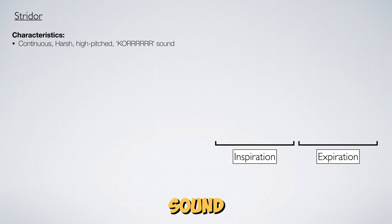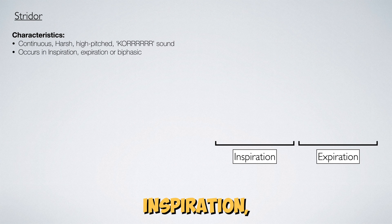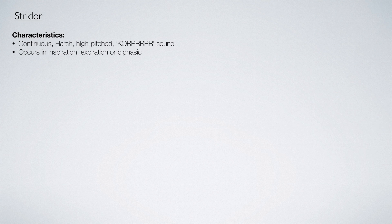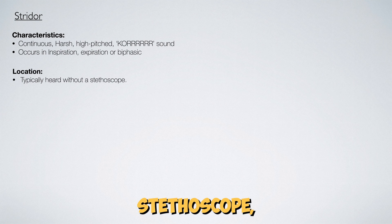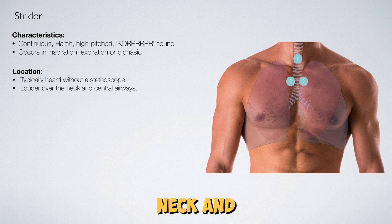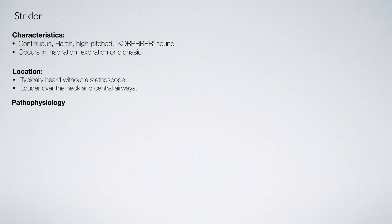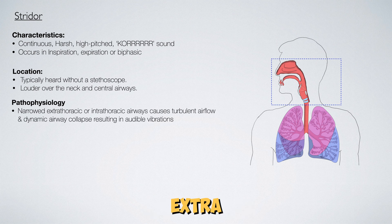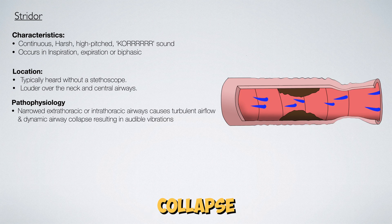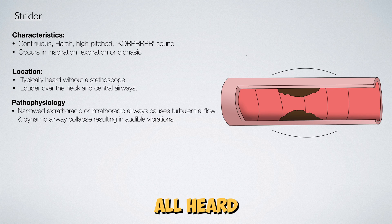In summary, stridor is a high-pitched continuous musical sound with a harsh grating quality. It can occur during inspiration, expiration, or can be biphasic, meaning it occurs in both. Stridor can be heard without the use of a stethoscope, but if you do auscultate, stridor is often louder over the neck and central airways. It is caused by obstruction of the extrathoracic or intrathoracic airways, which produce turbulent airflow and dynamic airway collapse, resulting in audible vibrations heard as stridor.